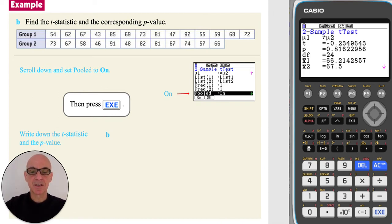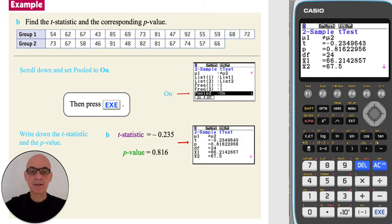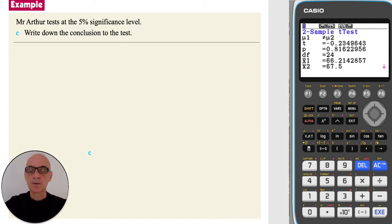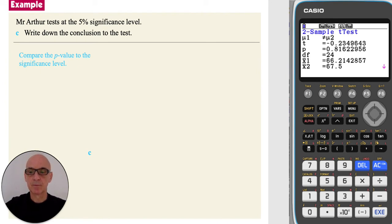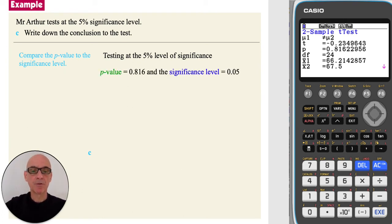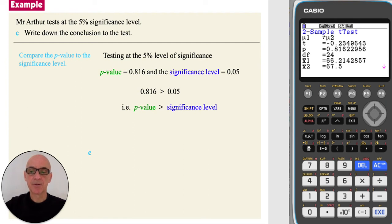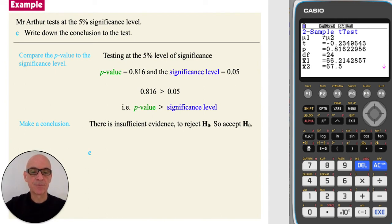Write down the value of the test statistic and the p-value, correct to three significant figures. To make a conclusion, as the critical value was not given in the question, we compare the p-value to the significance level, which was 5%, or 0.05. Since 0.816 is greater than 0.05 — i.e., since the p-value is greater than the significance level — we conclude that there is insufficient evidence to reject the null hypothesis, so we accept it.